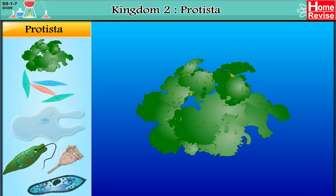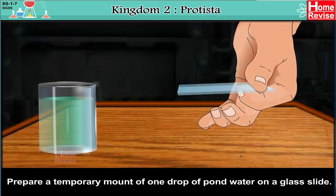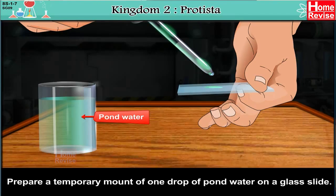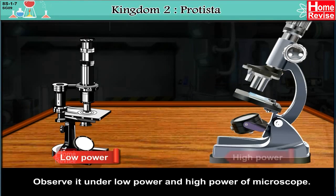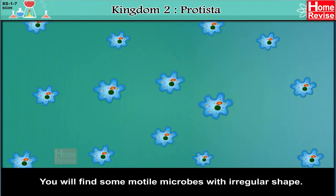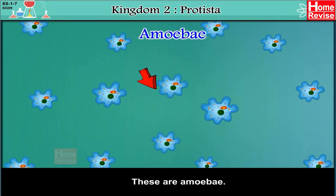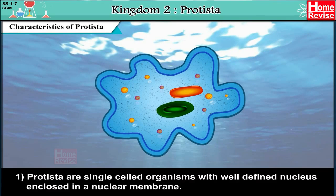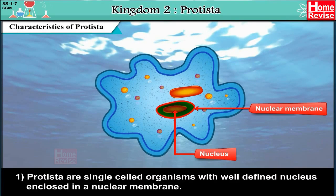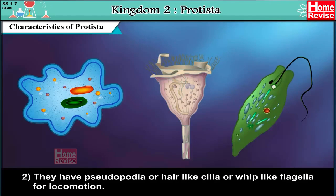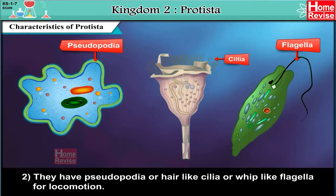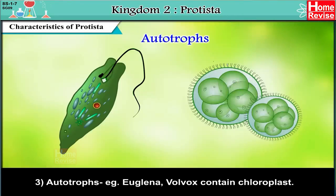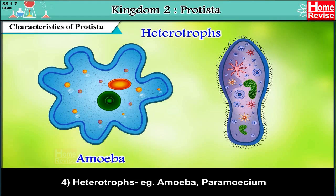Kingdom 2: Protista. Activity: Prepare a temporary mount of one drop of pond water on a glass slide and observe under low and high power of a microscope. You will find some motile microbes with irregular shape — these are amoebae. Characteristics of Protista: 1. Single-celled organisms with a well-defined nucleus enclosed in a nuclear membrane. 2. They have pseudopodia, hair-like cilia, or whip-like flagella for locomotion. 3. Autotrophs — e.g., Euglena, which contains chloroplast. 4. Heterotrophs — e.g., Amoeba, Paramecium.